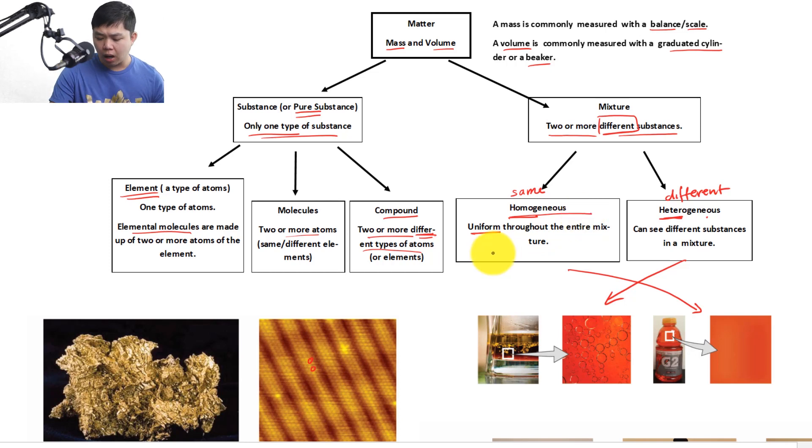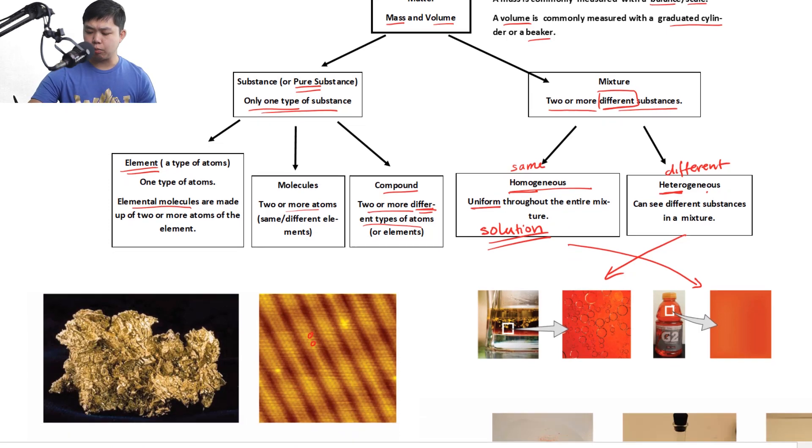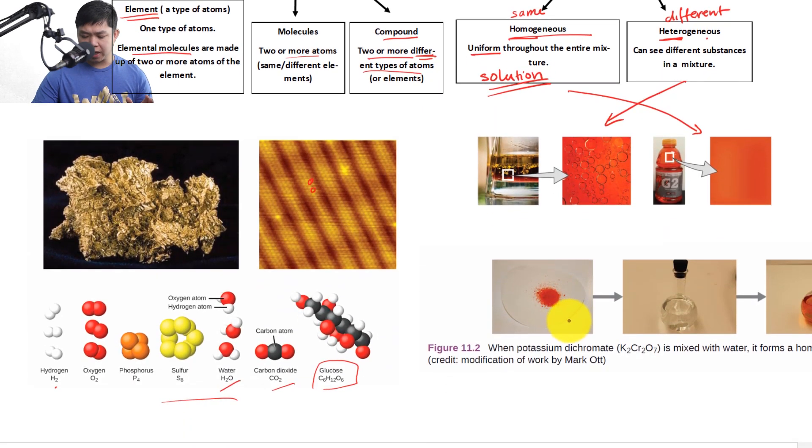And we have a term for this homogeneous that we also use as well, solution. When you see the word solution, it's also another term for homogeneous. And this term solution is commonly dealt with aqueous solution data. And let's look at an example of a solution. In this case, we have potassium dichromate, this right here. And then we have water. We mix them together.